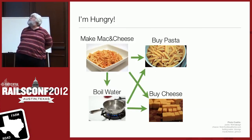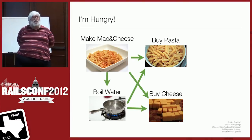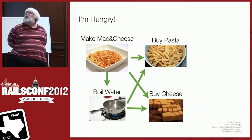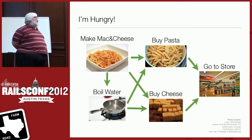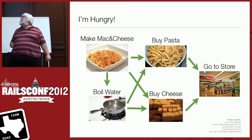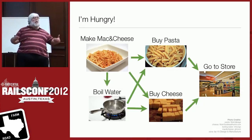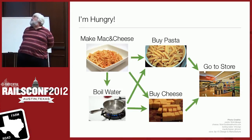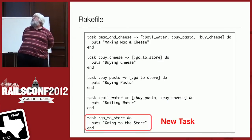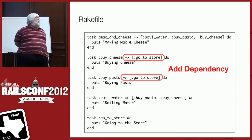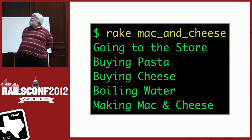I realize I broke this down a little bit incorrectly — maybe I should add a task called go_to_store. In order to buy cheese and buy pasta, I have to go somewhere, and there may be common work for both. So we add that as another task, and now buying cheese and buying pasta both depend on going to the store first. When we run it, we magically get: going to the store, buying pasta, buying cheese, boiling the water, and making the mac and cheese.